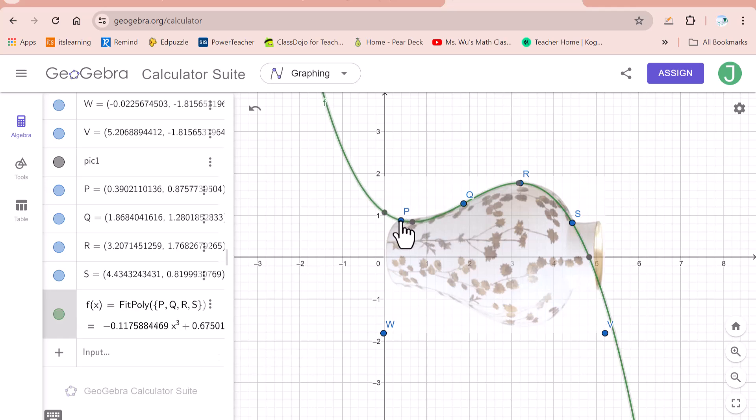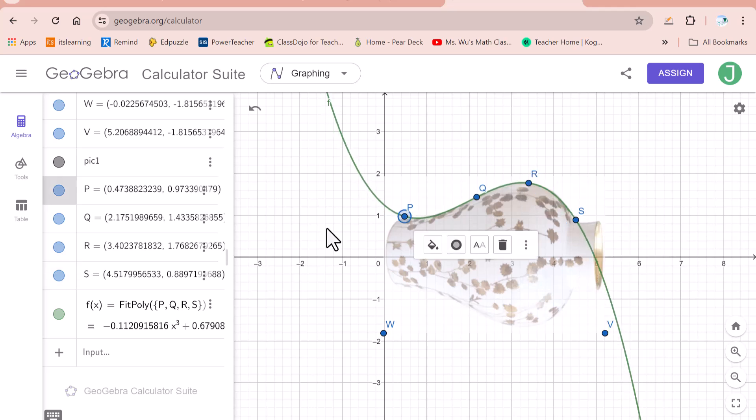Then you can move this P, Q, R, S to make this function fit the upper boundary of this vase very well. In this way, we figured out the best position for P, Q, R, S on the upper boundary of this vase.